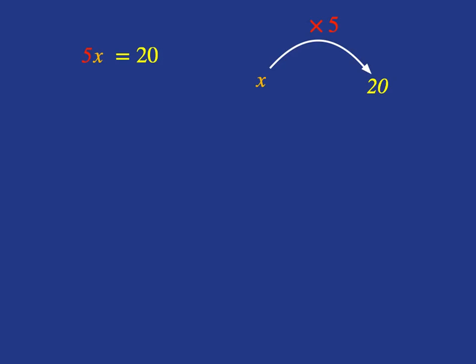We want to solve the equation, which means we want to get x on its own. We need to do the inverse operation, and the inverse of multiply is dividing. In an equation, what we do to one side, we must do to the other. So let's divide both sides of the equation by 5.